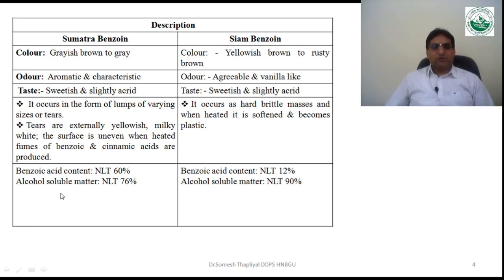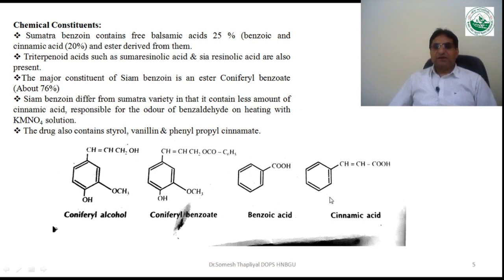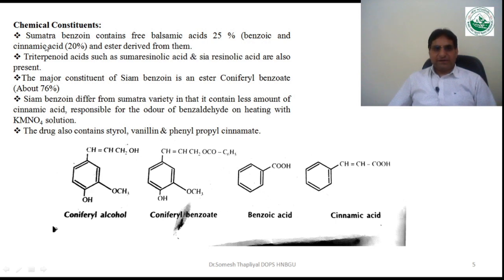Alcohol-soluble matter in Sumatra benzoin is not less than 76%, whereas in Siam benzoin it should be not less than 90%. Regarding chemical constituents, Sumatra benzoin contains balsamic acids composed of benzoic acid and cinnamic acid, and esters derived from them — specifically free balsamic acids, benzoic acid, cinnamic acid, and their esters. It also contains triterpenoid acids such as sumaresinolic acid and siaresinoic acid.